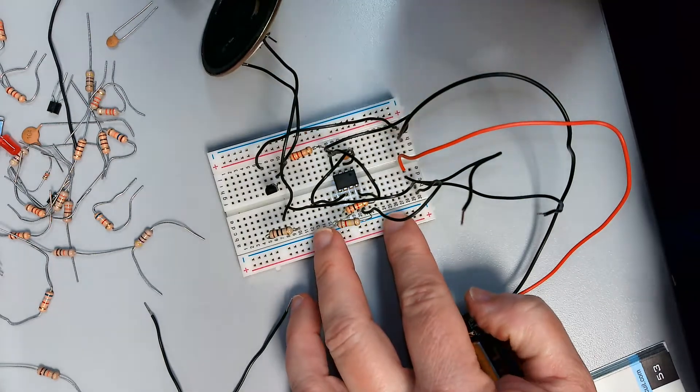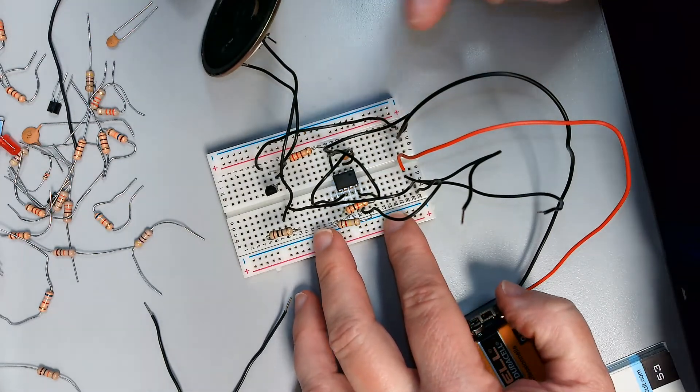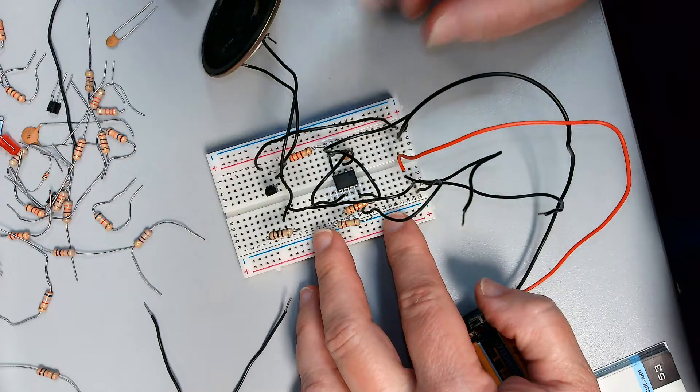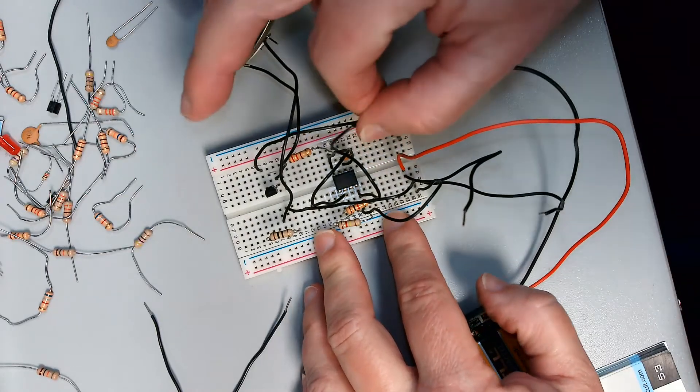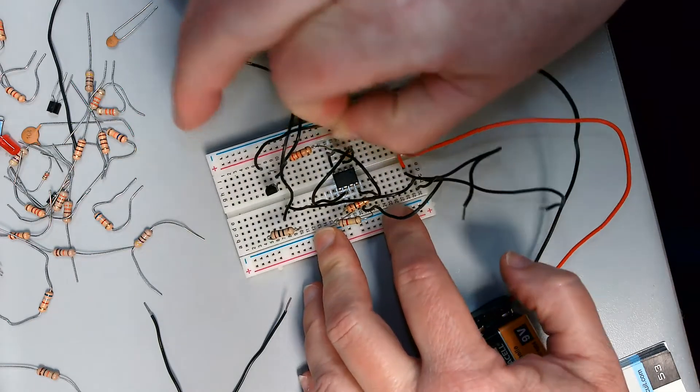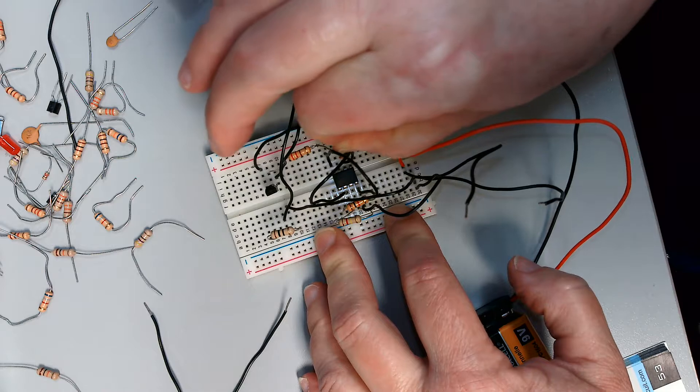So what you're seeing here is the circuit for lab 23, the continuity tester. Now when I had it together earlier I was only getting clicking noises and I'll show you why.